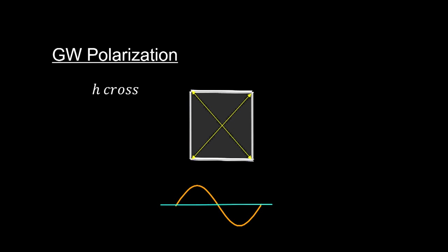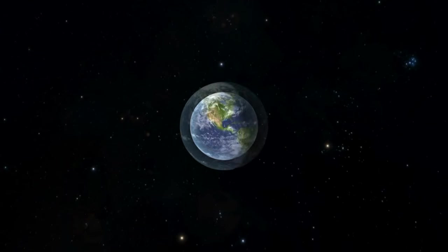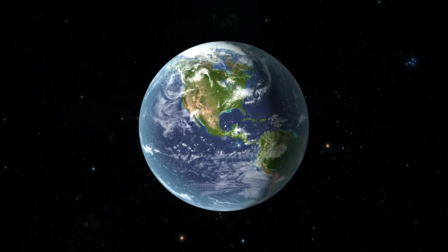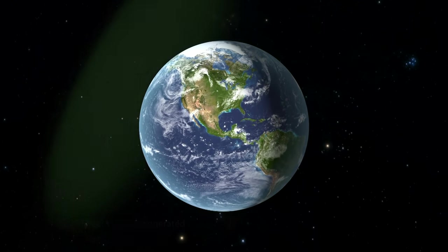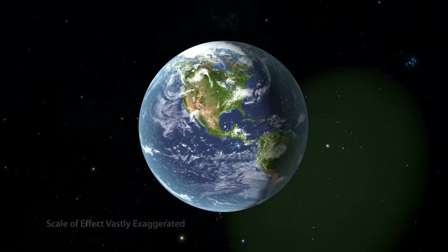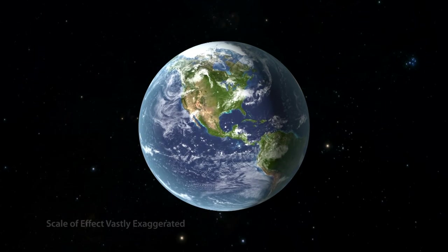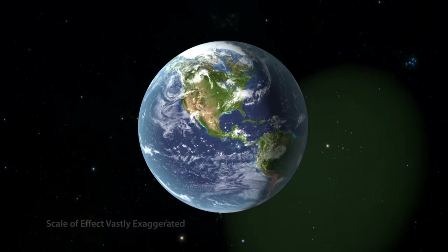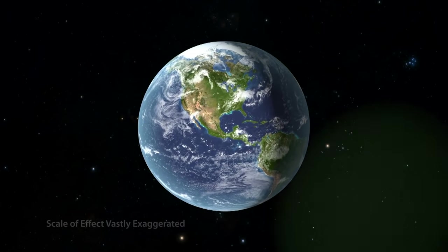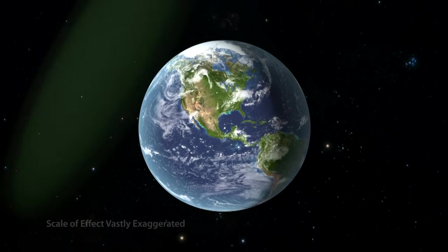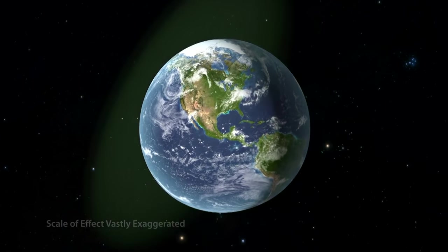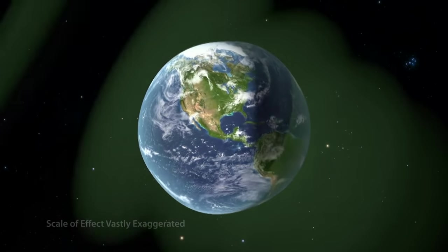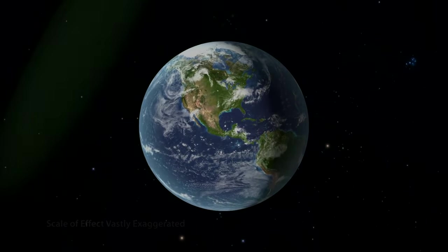When describing a gravitational wave, we can now be more precise than it's a ripple in space-time. A gravitational wave is an oscillating polarized metric that operates in the plane perpendicular to the direction of the wave as it moves through space at the speed of light. And we have seen what this means for the objects that encounter such a wave. They are stretched and squeezed in various directions.